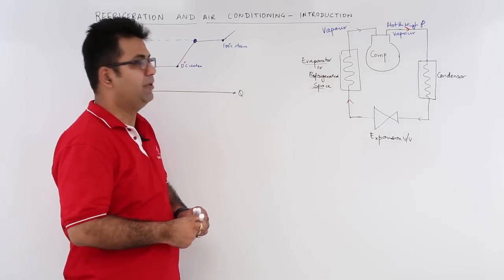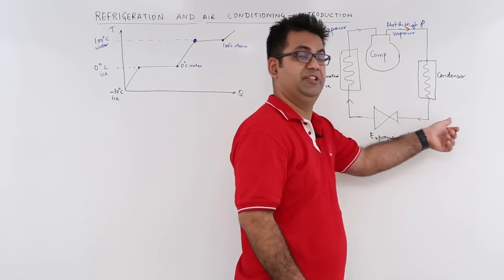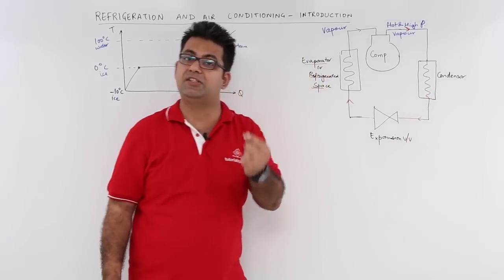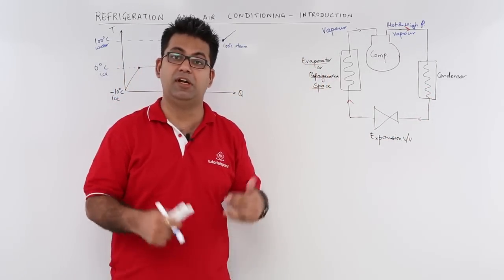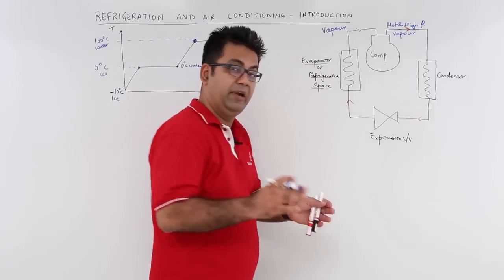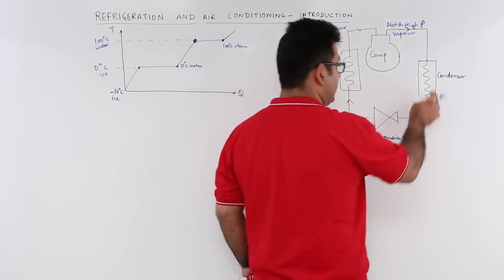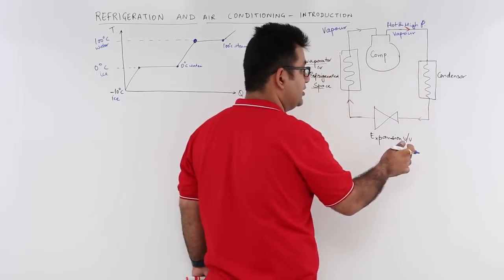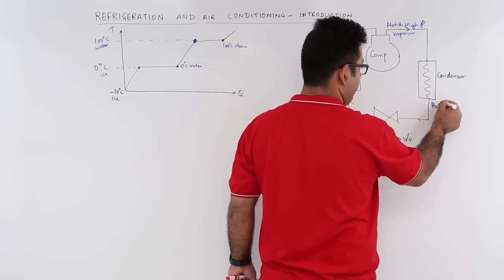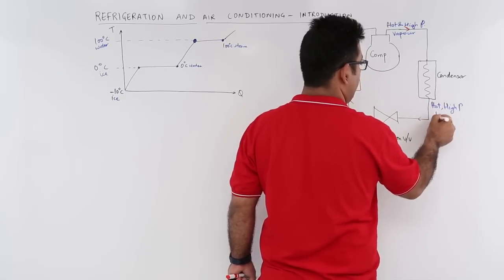This hot and high pressure vapor goes into the condenser. What happens in the condenser? It condenses — condensation takes place. We maintain the same pressure, so what is coming out of the condenser is hot, high pressure liquid.